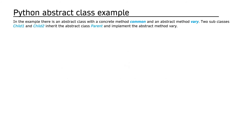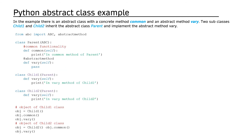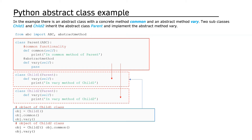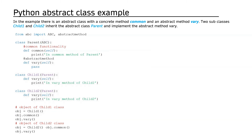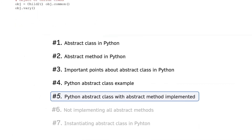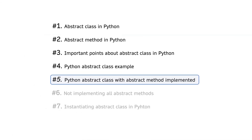In the Python abstract class example, there is an abstract class with a concrete method 'common' and an abstract method 'vary'. Two subclasses, Child One and Child Two, inherit the abstract class Parent and implement the abstract method 'vary'. At the output, when the common method is called the common method of Parent is invoked, and when the vary method is called the method defined within the subclass is invoked.